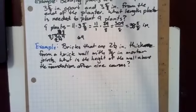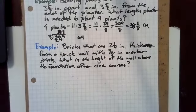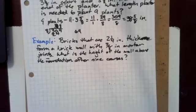Finally, we're told that bricks are two and a quarter inch thick and they form a brick wall with three eighths inches of mortar joints. What is the height of the wall above the foundation after nine courses?